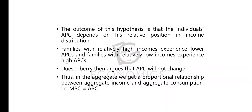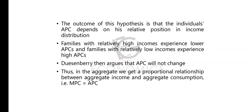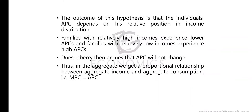Duesenberry then argues that APC will not change — it will be constant. Thus, in aggregate, we get a proportional relationship between aggregate income and aggregate consumption. When aggregate income increases by 1,000 rupees, there is a proportional increase in consumption. This can also be denoted as MPC equals APC — marginal propensity to consume equals average propensity to consume — in the Relative Income Hypothesis.